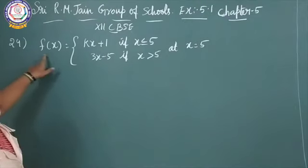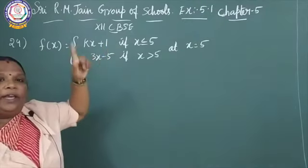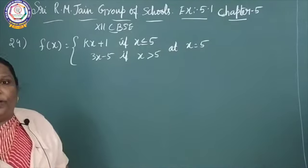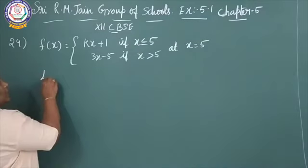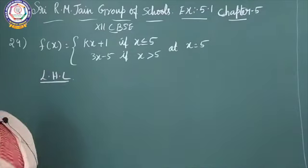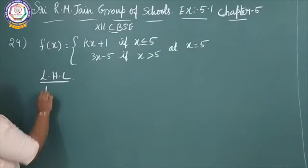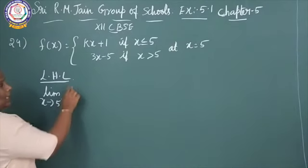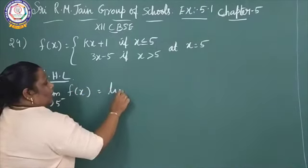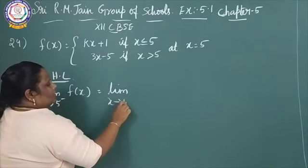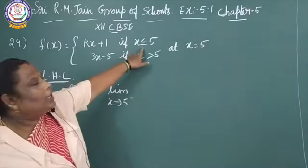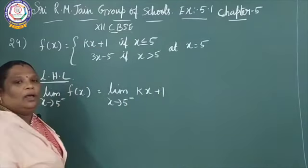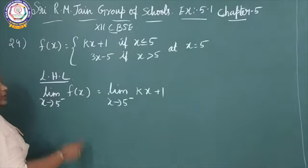Now the 29th sum: f of x equals kx plus 1 if x is less than or equal to 5, and 3x minus 5 if x is greater than 5, at x equal to 5. This is given as a continuous function. Check the left hand limit first: limit x tends to 5 minus of f of x. Since x is less than or equal to 5, we take the value kx plus 1.